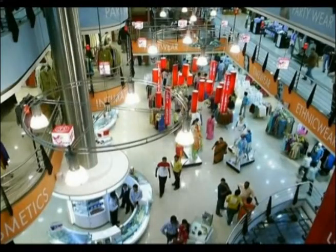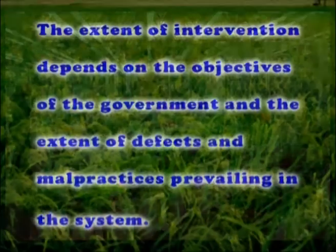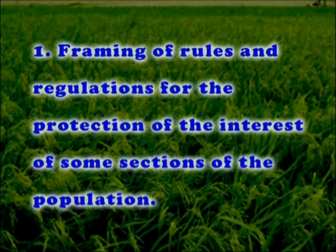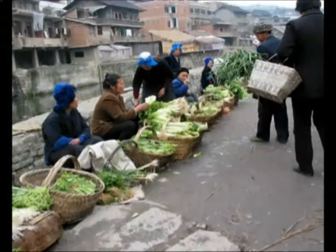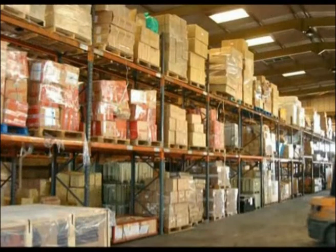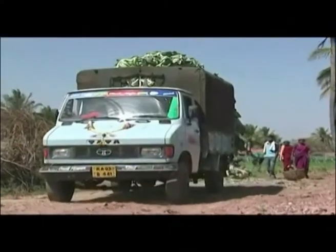The role of government in promoting agricultural marketing: In the interest of public welfare, the government intervenes in the marketing system. The extent of intervention depends on the objective of the government and the extent of defects and malpractices prevailing in the system. Government intervention may be direct or indirect and may include framing of rules and regulations for the protection of the interest of some sections of the population — including restriction on activities of traders, licensing and market regulation, as well as promotional activities such as storage and warehousing, transportation and communication facilities, credit facilities, grading and standardization, and encouragement of cooperative marketing.